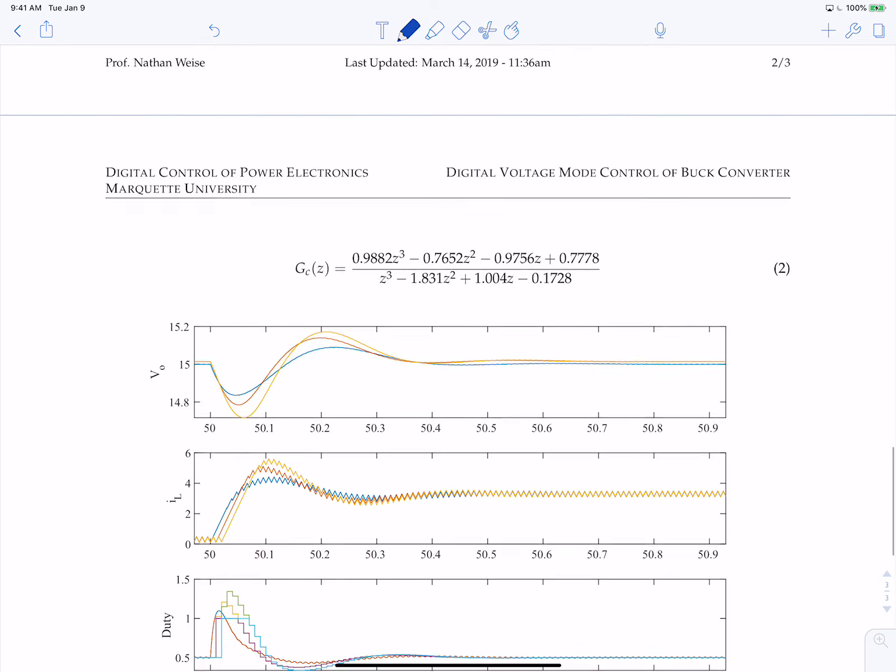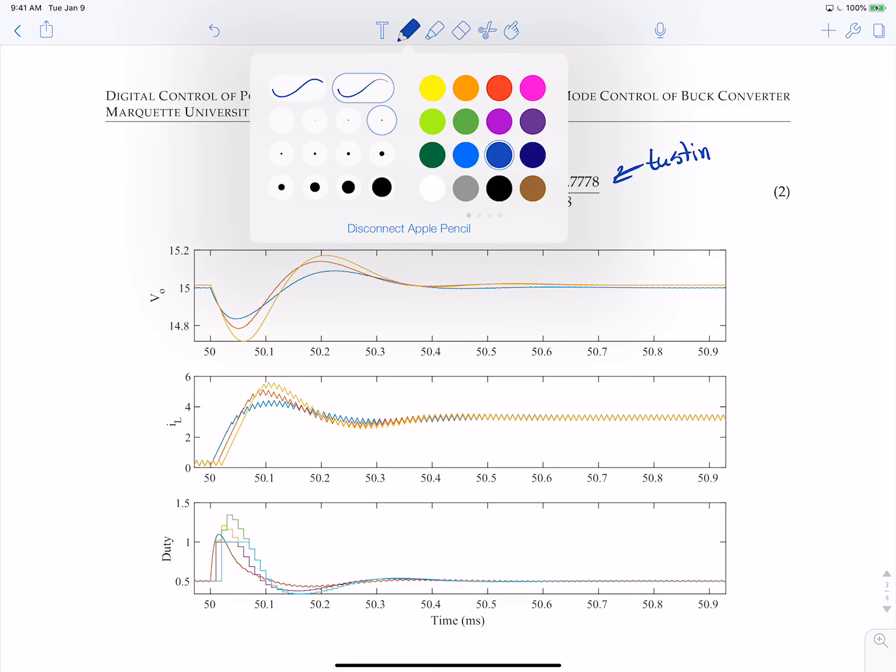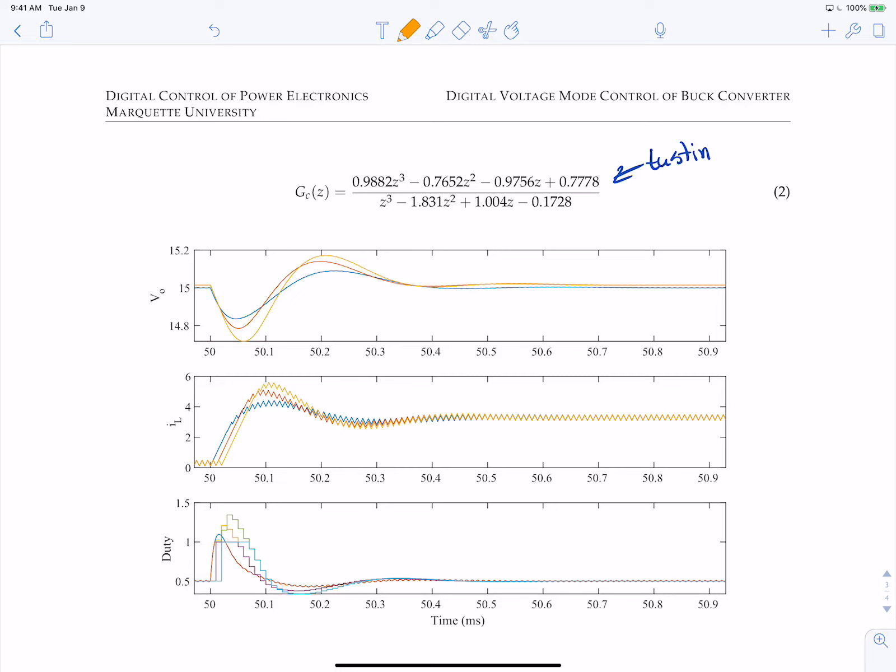So we did this controller again, but this is now Tustin here in equation 2. So this is converting the continuous time function to Tustin, to the bilinear transform. And now we get a third set of waveforms sitting on top of each other here. And so you get this yellow slash orange one, which is the Tustin digital controller, our red one, which is our backwards Euler,